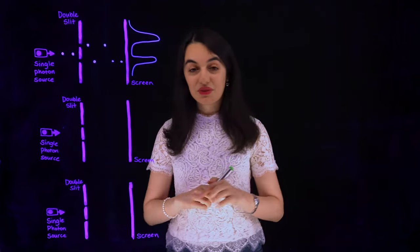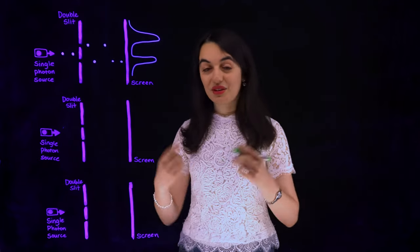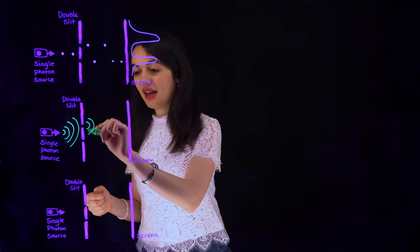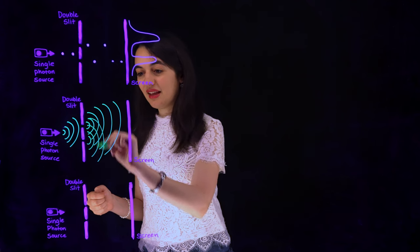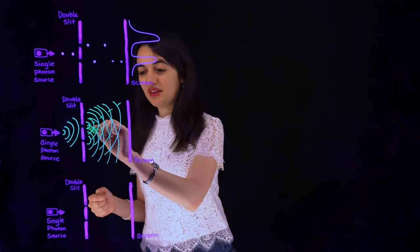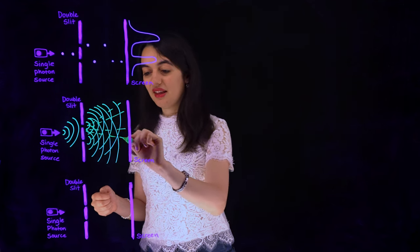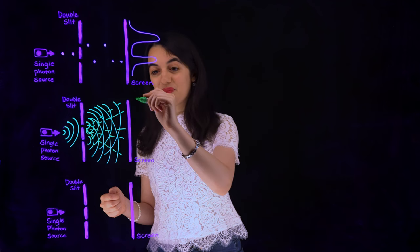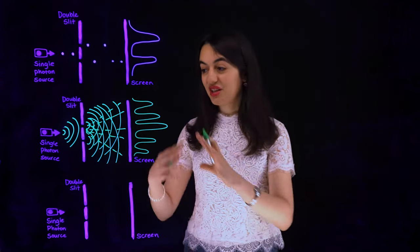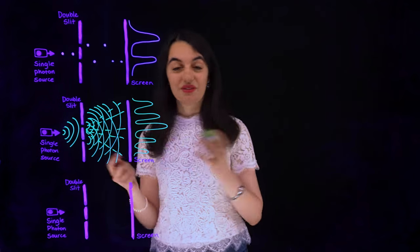But if instead our source was of classical waves, then we would see something else. When we send a classical wave through the double slits, it will have a part going through each slit, and these two parts of the wave interfere. This leads to constructive and destructive interference, producing an intensity pattern with lots of bright and dark regions on the screen, showing that interference between the two parts of the wave happened.